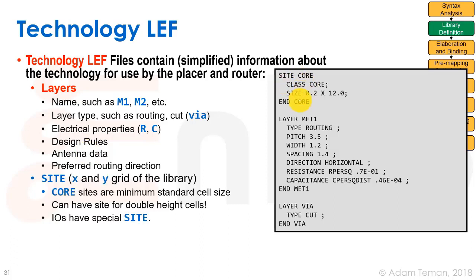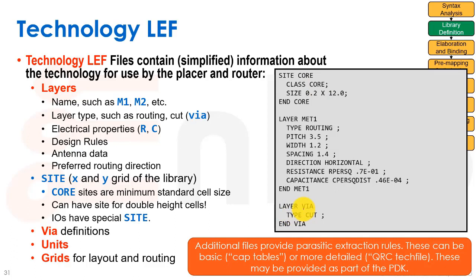Another part of the LEF is the site definition, which is the X and Y grid of the library — we'll go into that more in a second. And finally we have other things such as VIAs. VIAs are a special type of layer in the LEF. There are many types — VIA1, VIA2, and so forth — that connect between layers. They have different cut patterns, must be covered by the metal above and below them, and sometimes require specific sizes. A good VIA definition is very important for place and route. We'll also have units and grids for layout and routing such as the tracks.